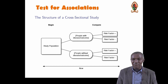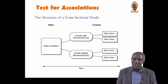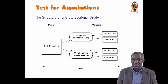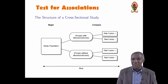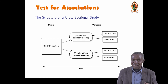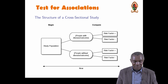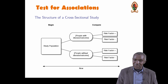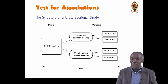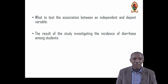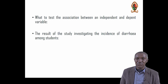Among those who have COVID, some use public transport — that's risk factor positive — and some may not, that's risk factor negative. Among those without COVID, some may use public transport and some may not. So we have the outcome as the dependent variable and the risk factor as the independent variable, and we want to test the association between getting COVID and using public transport.